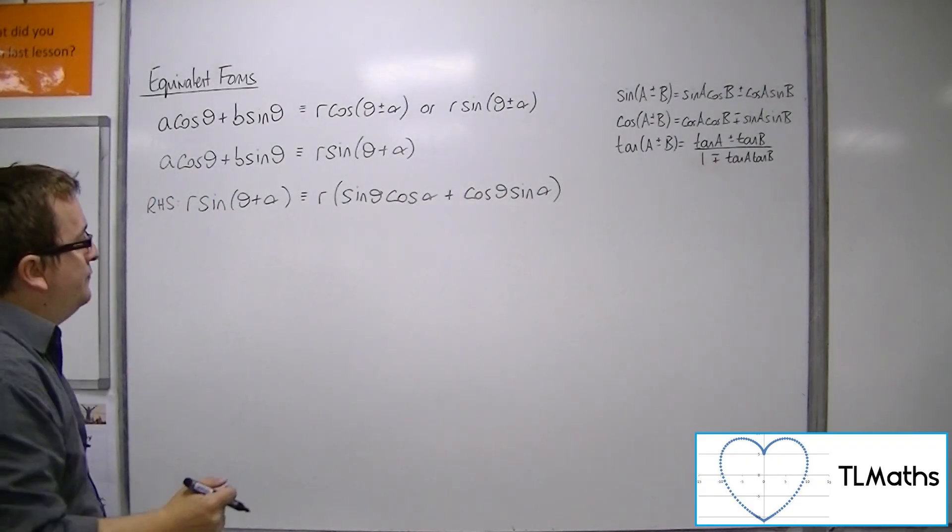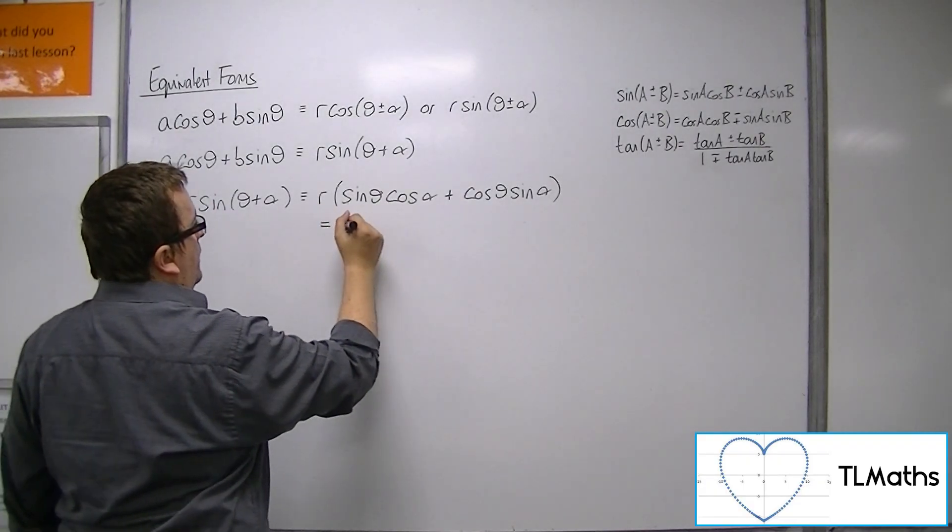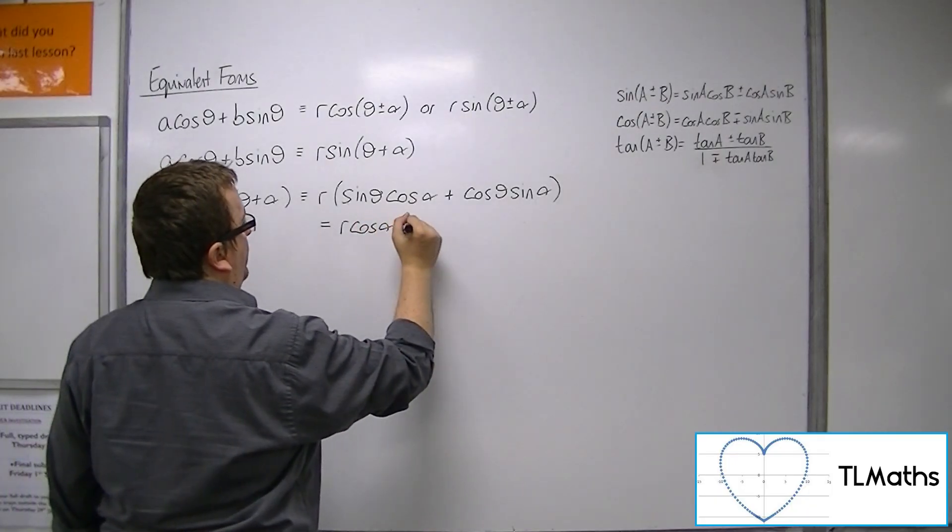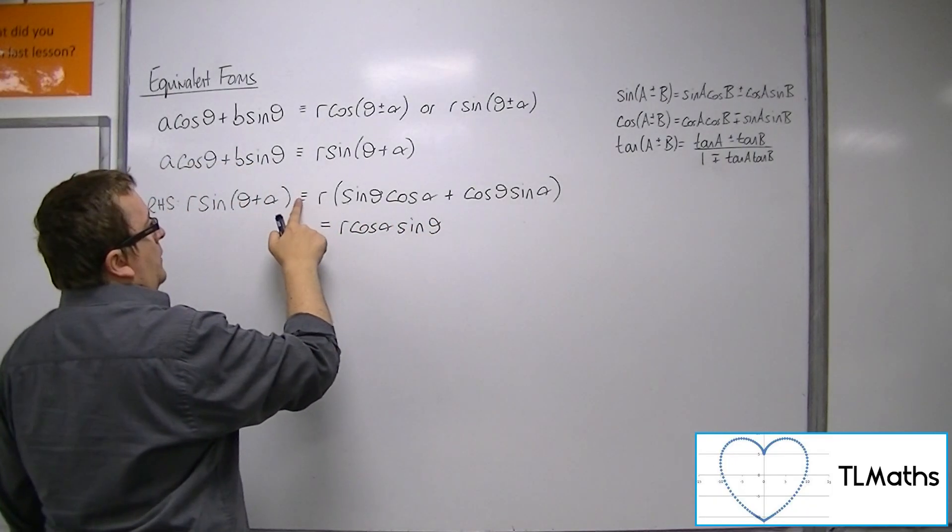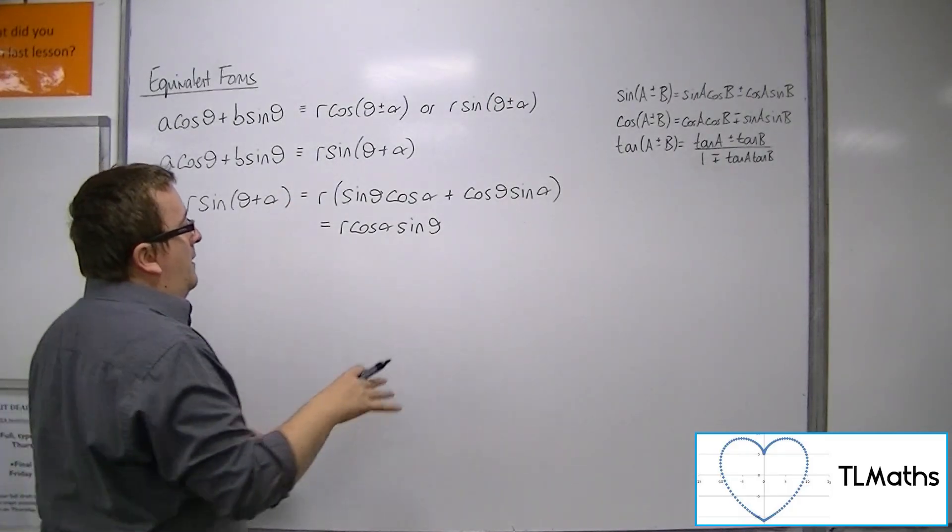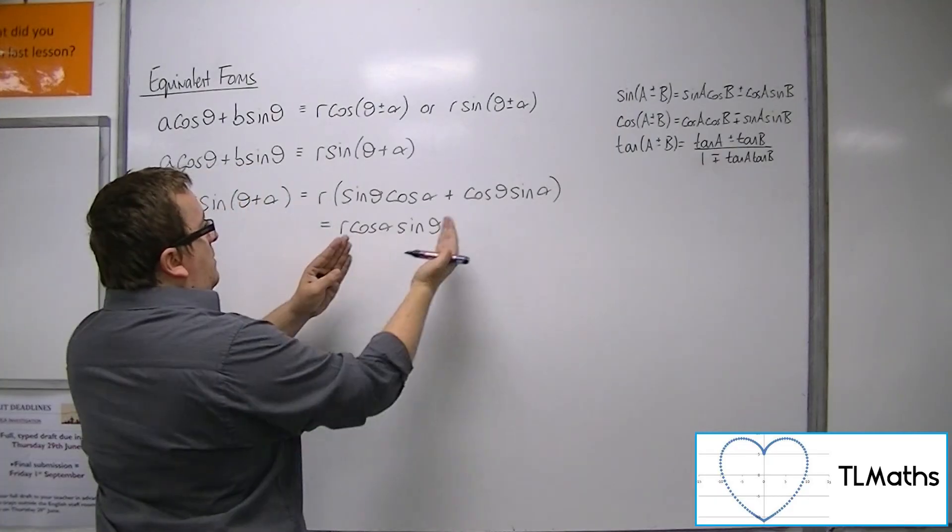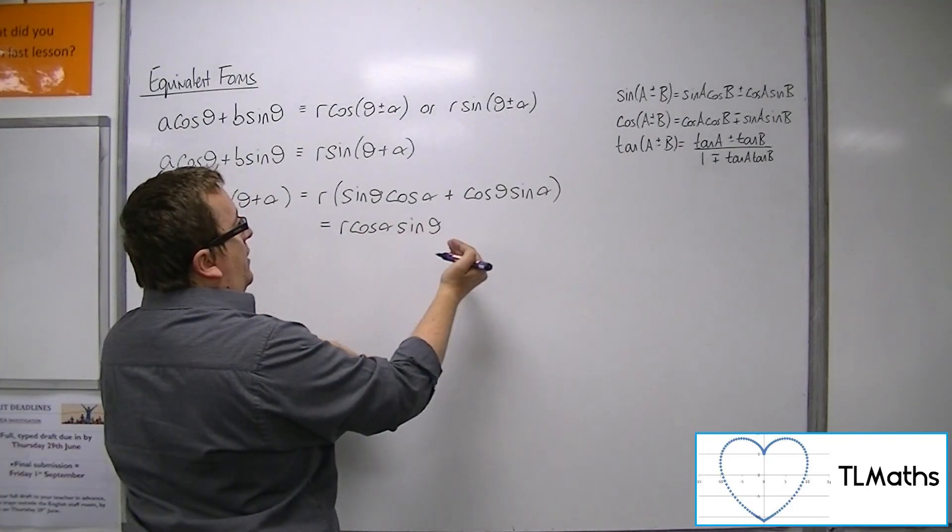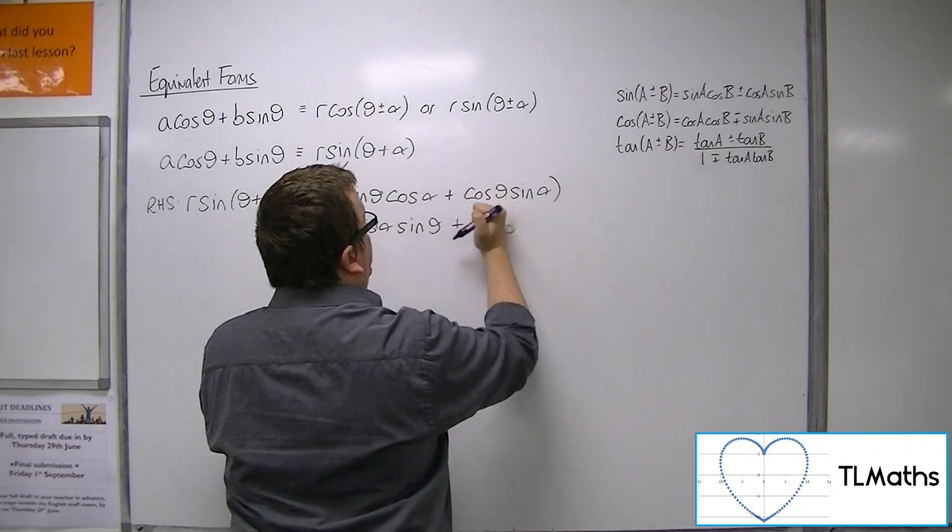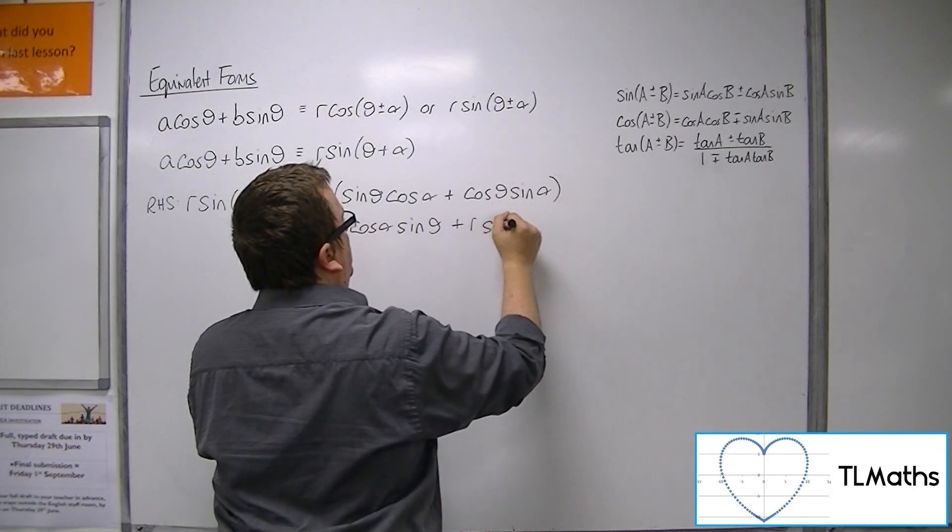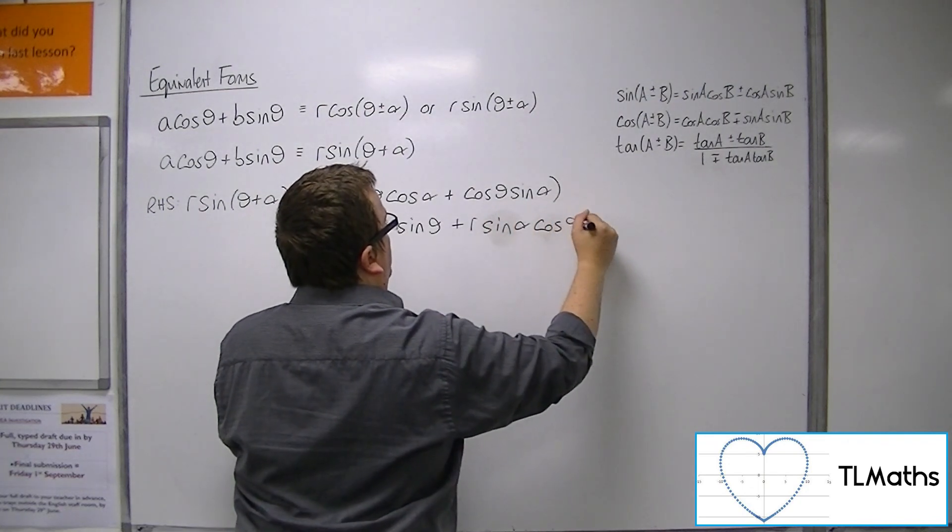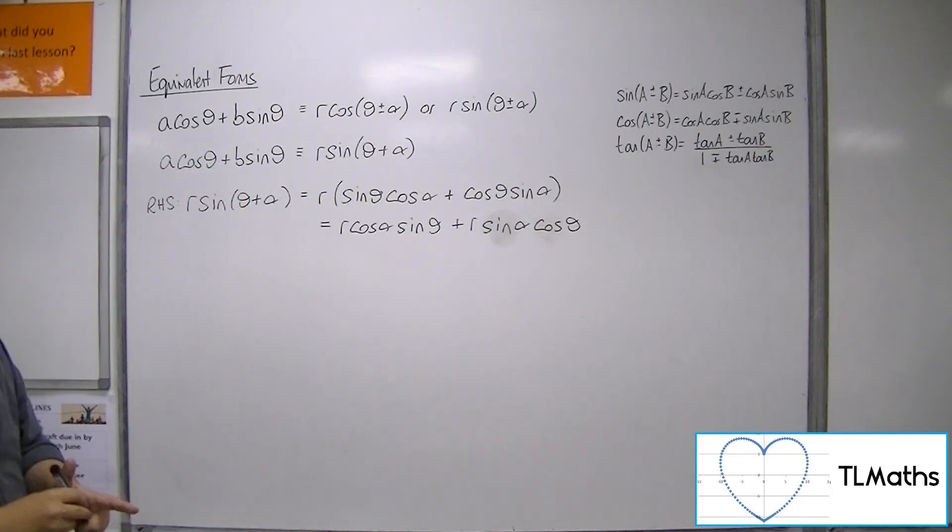Now, if I expand the bracket out, then we've got, and bring the alphas to the front, r cos alpha sine theta. I'm going to move to equal signs because I'm just going to forget otherwise. So I'm going to bring the cos alpha to the front. r cos alpha sine theta plus r sine alpha cos theta.